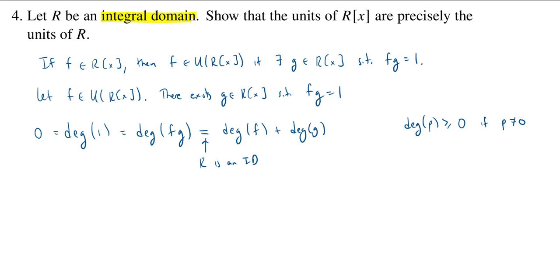And in this case, do I know that f and g are not the 0 polynomial? Well, sure. Because f times g is equal to 1, neither one of them could be 0. If one of them was 0, their product would be 0. So, this implies that f is not equal to 0 and g is not equal to 0.